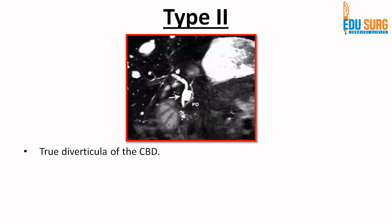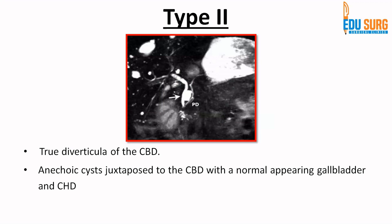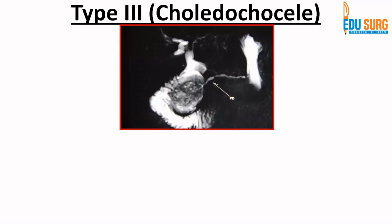Type 2 is a diverticulum of the common bile duct. On ultrasound it appears as an anechoic cyst juxtaposed to the CBD, with a normal-appearing gallbladder and common hepatic duct. However, it can also resemble a gallbladder duplication. So type 2 is a diverticulum of the common bile duct.